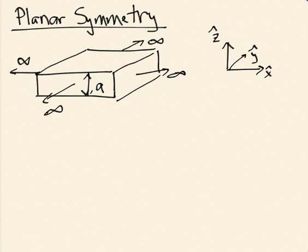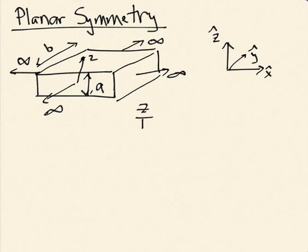There's no real object that is a slab going off to infinity, but you can imagine a finite-size slab of charge where, if you stand close enough, it looks very big and you can treat it as approximately infinite. So this calculation applies when you're very close to the slab compared to the length of a side — we'll call that dimension b. If z over b is very small, you can use this approach.